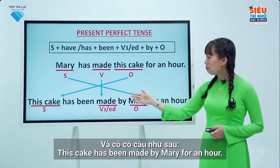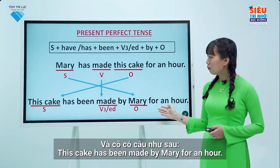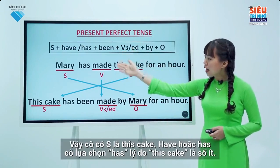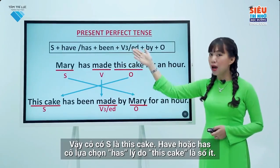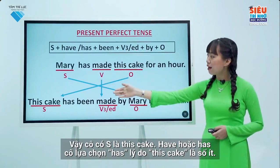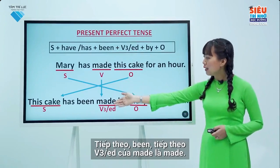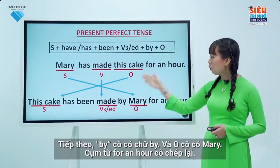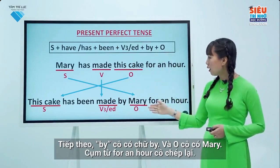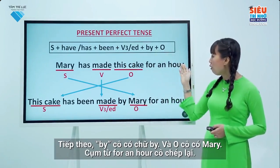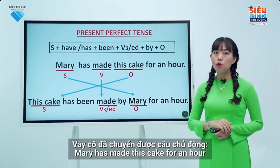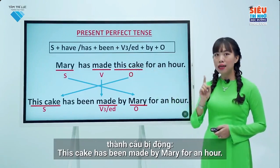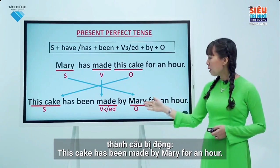The passive sentence is: 'This cake has been made by Mary for an hour.' Let's check against the structure: subject is 'this cake'; I choose 'has' because 'this cake' is a singular noun; then 'been'; then verb 3 of 'made' is 'made'; then 'by'; then object 'Mary'; and the phrase 'for an hour' remains the same. So the active sentence 'Mary has made this cake for an hour' becomes 'This cake has been made by Mary for an hour.'